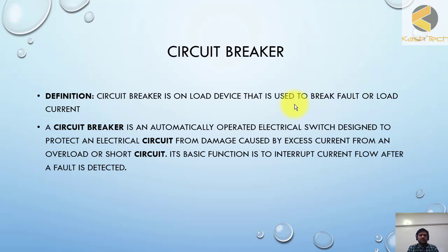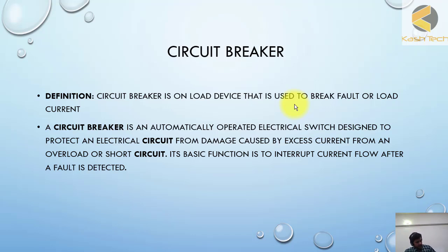A breaker is basically a device designed to break the fault current. If there is a fault, it will break the fault current. You can also use this breaker to interrupt the power — for example, to switch off. In our houses we see a simple switch to turn on and off because at low levels you don't need a specialized interrupting unit, but at high voltages and high currents a special mechanism and special arrangement is required. A special interrupter unit is used to break the load current; otherwise the current will not be broken and the fault or load current will cause a continuous spark that can damage the breaker.